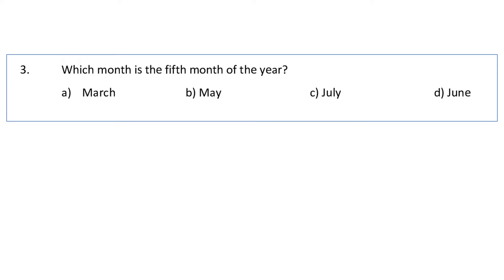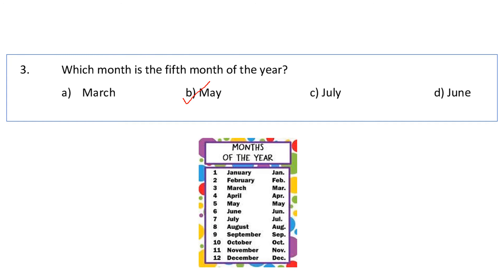Which is the 5th month of the year? A) March, B) May, C) July, D) June. The 5th month will be: 1st is January, 2nd is February, 3rd is March, 4th month is April and 5th month is May. So the answer will be May, the 5th month of the year.